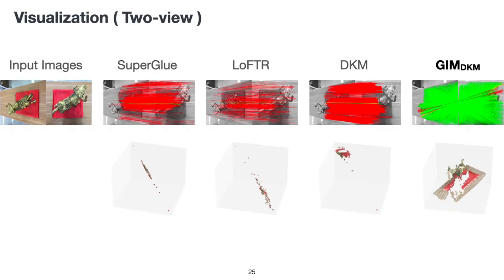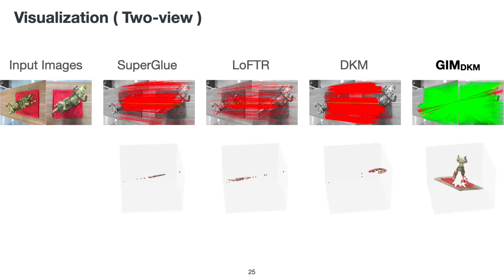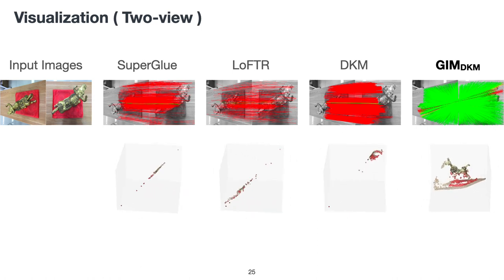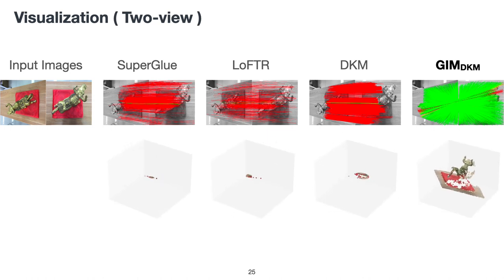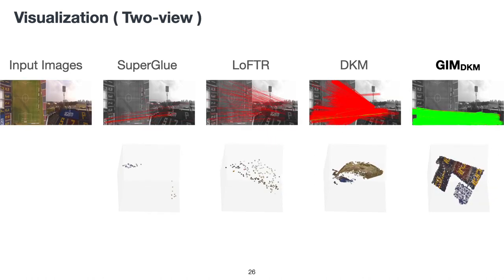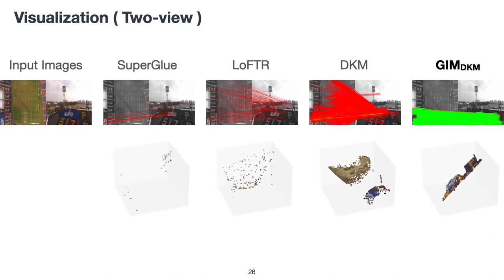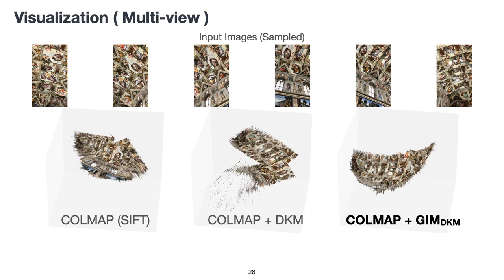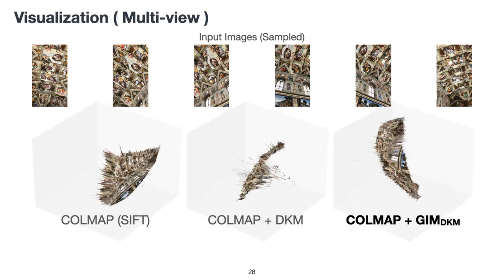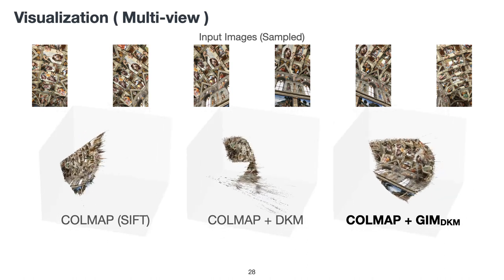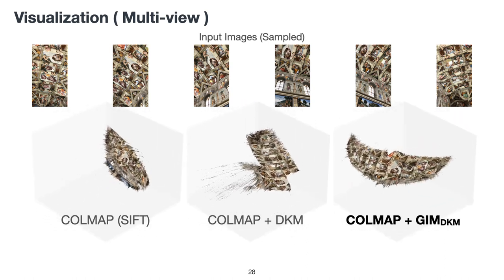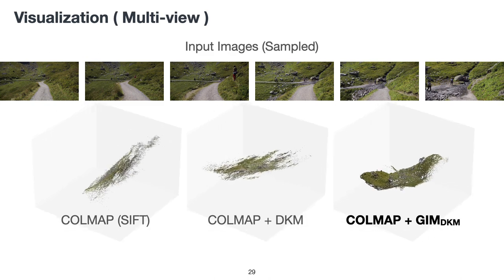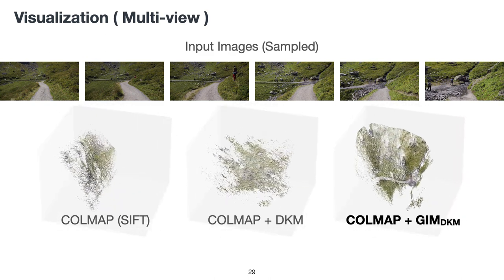Here are some visualizations. We first show two-view matching results without using RANSAC for outlier filtering. Green lines indicate correct matches and red lines indicate incorrect matches. GIM is the only method that can find a sufficient amount of reliable matches. Here is another result with small overlaps, and a result with large motions. Replacing the SIFT matching with GIM, we can also significantly improve the output quality of COMAP. Comparing to SIFT and DKM, GIM can reconstruct a larger scene region with less noise.